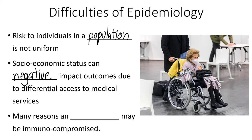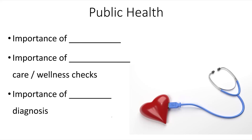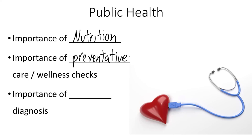It's also very possible for individuals to be immunocompromised for a variety of reasons. So this concept of public health becomes an important thing to talk about, both from the medical perspective and from the ethical perspective as well. Things such as the importance of nutrition, the importance of preventative care and welfare checks, and the importance of early diagnosis — these all increase individuals' likelihood of receiving proper medical care and being overall healthy.